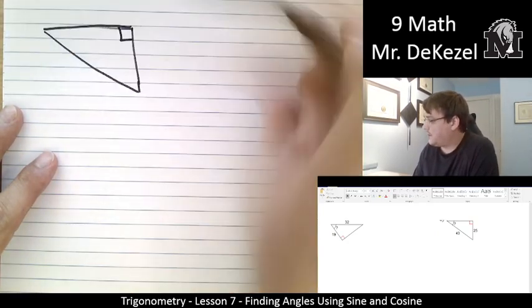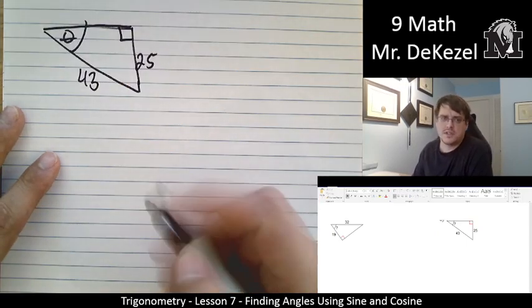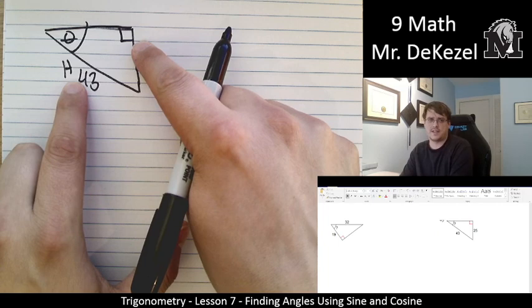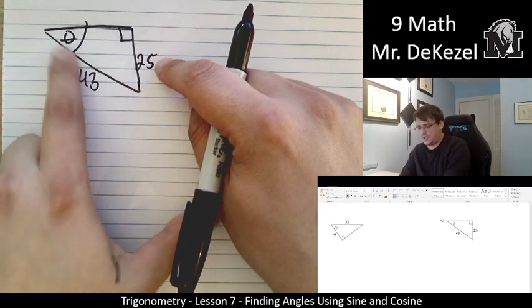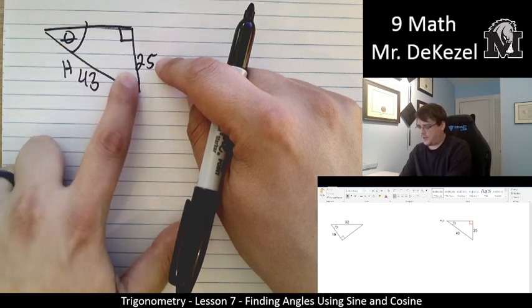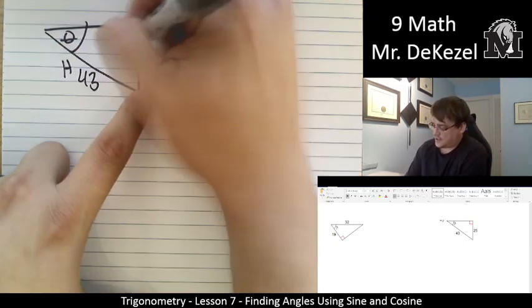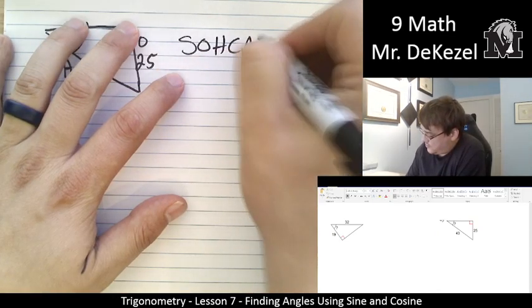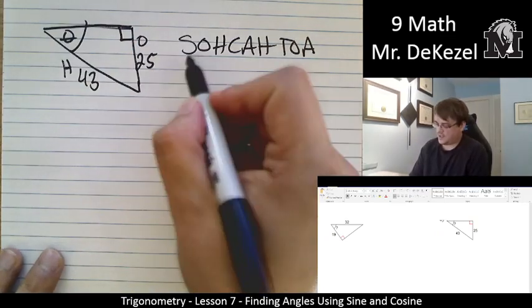Right angle up here. Angle of interest on the left. 43 and 25. So, the hypotenuse is clearly 43 across from the right angle. That's the hypotenuse. And then, our other side that we know is across from theta. So, that is over here. So, that is the opposite side. That's across from it. So, if we write out our ratios.